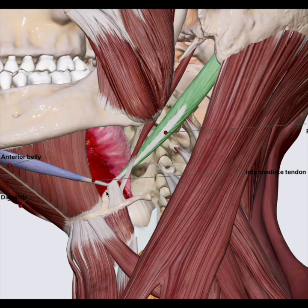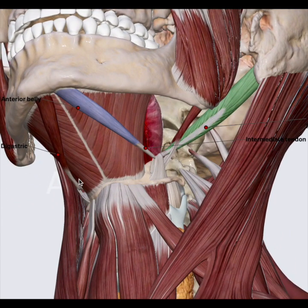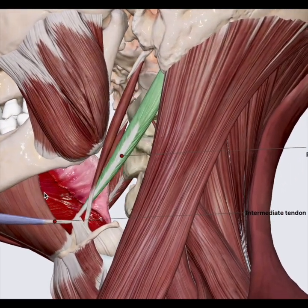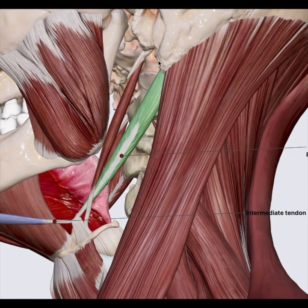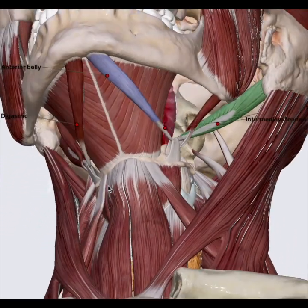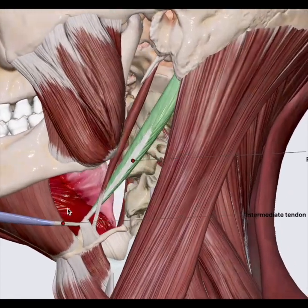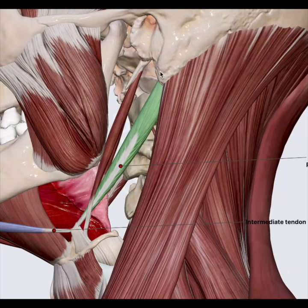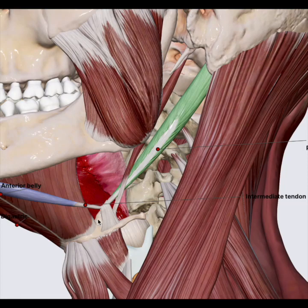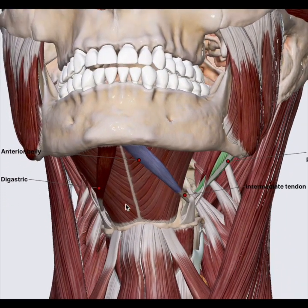The digastric muscle is a small muscle situated just under the mandible, extending from the mastoid process of the temporal bone. The posterior belly arises from the medial surface of the mastoid notch. The intermediate tendon is a fibrous sling anchored to the superior aspect of the body of the hyoid. This is why we keep saying the anatomy of the neck is very compact — every muscle has its own function and together they produce a different range of movement.